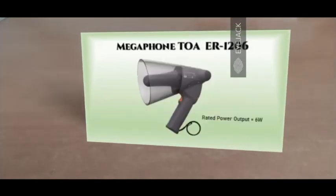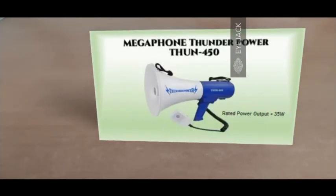Let's look at some megaphones available in the market. This one is TOA model ER1206, it has a rated power output of 6 watts. This is a Thunder Power 450 version and it has a rated power output of 35 watts.